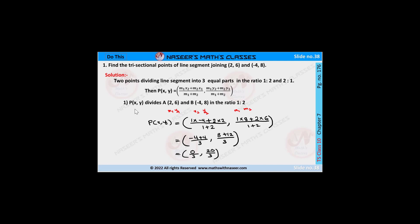The first point P divides the given points A(2, 6) and B(-4, 8) in the ratio 1:2. Here M1 = 1, M2 = 2, and (X1, Y1) = (2, 6), (X2, Y2) = (-4, 8).